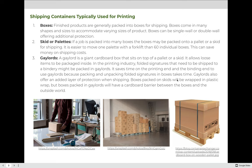A gaylord is essentially a giant cardboard box that sits on top of a pallet or a skid. It allows loose items to be packaged inside. In the printing industry, folded signatures that need to be shipped to a bindery might be packaged in gaylords. It saves time on the printing end and the binding end because packing and unpacking folded signatures from boxes takes time. Gaylords also offer a layer of added protection — boxes packed on skids will be wrapped in plastic wrap, but boxes packed in gaylords will have a cardboard barrier between the boxes and the outside world.